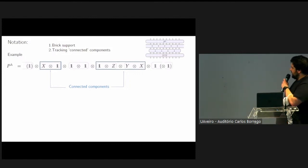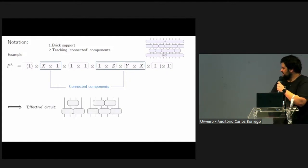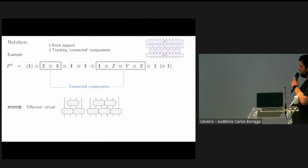Moreover, the effect of this pair of identities means that in practice we have to consider just an effective circuit which is associated to the Pauli string we are considering. For instance, in this case with this given Pauli, the effective circuit is just the product of two smaller sub-circuits.